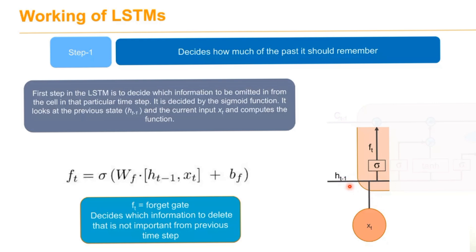It looks at the previous state and the current input and computes the function defined by sigma(W_f · [h_{t-1}, x_t]) plus the bias function.